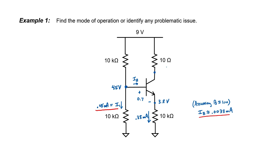Let's now find the collector voltage. I can find it by just assuming that the collector current is equal to my emitter current. I can then use Ohm's law through the 10 ohm resistor in order to find the collector voltage. It works out to be 8.9962 volts.